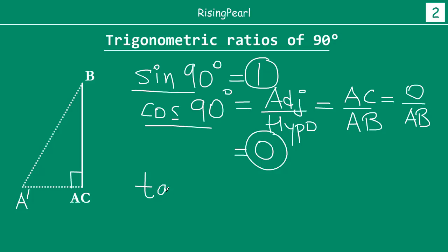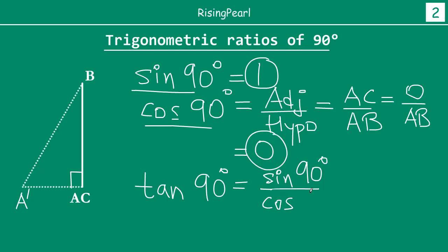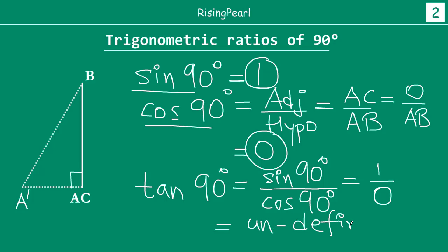What about tan 90 degrees? We know that tan of any angle is the ratio of sine of that angle divided by cosine of that angle. So tan 90° equals sin 90° divided by cos 90°, which is 1 divided by 0. Whenever we divide any number by 0, we get undefined or not defined. We cannot divide any number by 0, so tan 90 degrees is undefined.